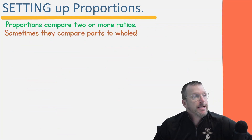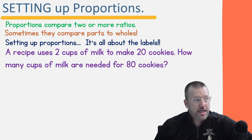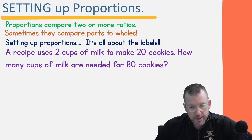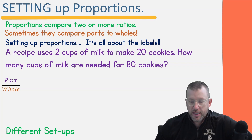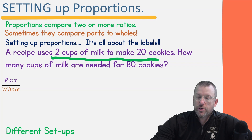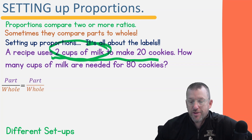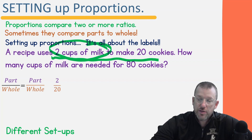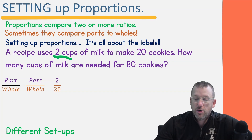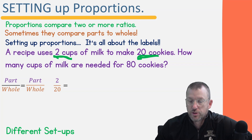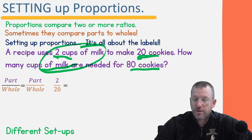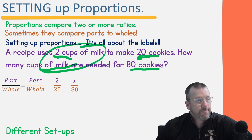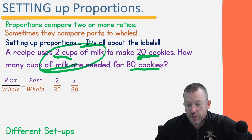Let's set up another proportion. This time we're comparing parts to wholes using a recipe: the recipe uses two cups of milk to make 20 cookies. How many cups of milk are needed for 80 cookies? In our first ratio, the part is two cups of milk, and the whole is 20 cookies — so two over 20. We set that equal to the unknown cups of milk over 80 cookies, which is the whole batch.